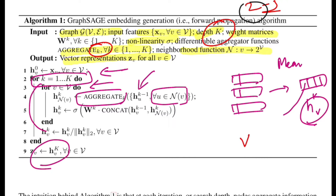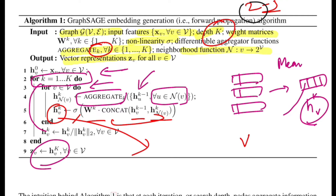This mean gives the neighborhood representation for node v at depth k. To get the final representation for node v, we concatenate the embedding of v from the previous depth with the aggregated neighborhood representation, apply a linear transformation, then pass it through a non-linearity. This gives the k-th depth representation for the node. You repeat this process for all nodes and finally perform normalization.